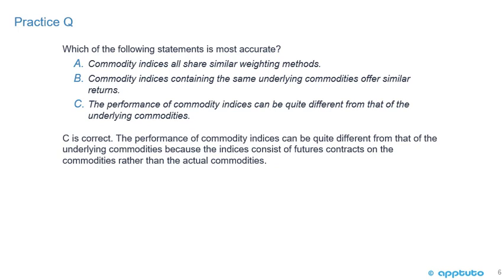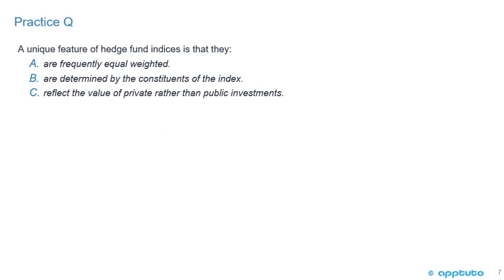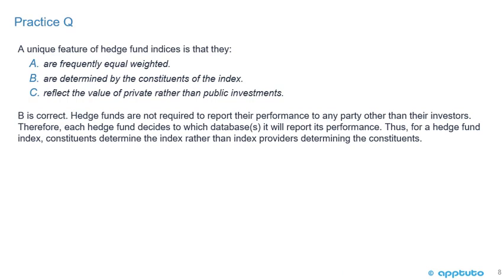Practice question: A unique feature of hedge fund indices is that they — A, are frequently equal weighted; B, are determined by the constituents of the index; or C, reflect the value of private rather than public investments. B is correct. Hedge funds are not required to report their performance to any party other than their investors. Therefore, each hedge fund decides to which databases it will report its performance. Thus, for a hedge fund index, the constituents determine the index rather than the index providers determining the constituents. That's one of those questions where you go, 'Aha, I didn't know that — now I do.'